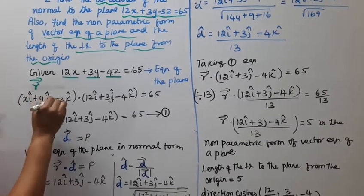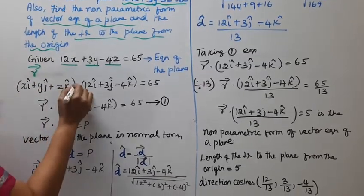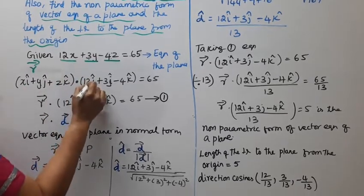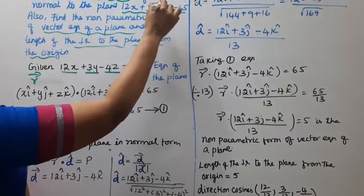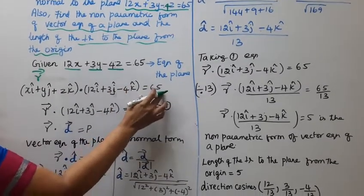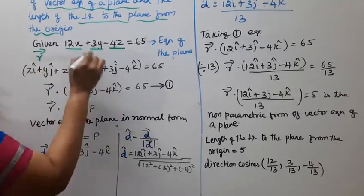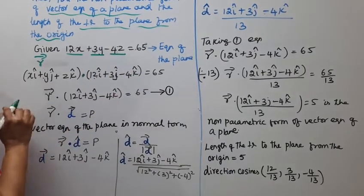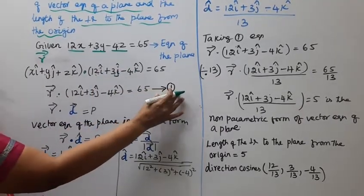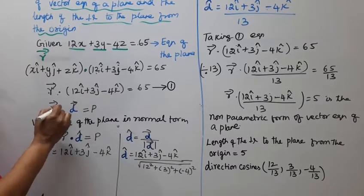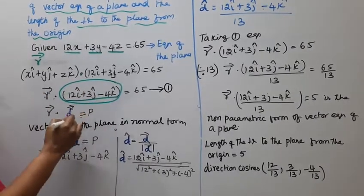The position vector is x i cap plus y j cap plus z k cap. So r vector, which is x i cap plus y j cap plus z k cap, dot with 12 i cap plus 3 j cap minus 4 k cap, equals 65. So if we get the dot product, r vector dot this equals 65.